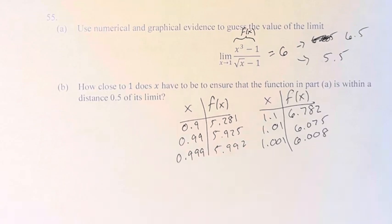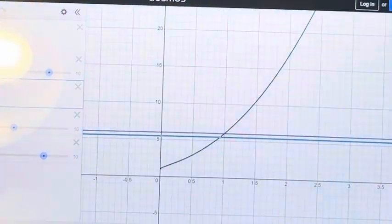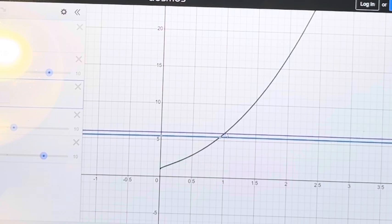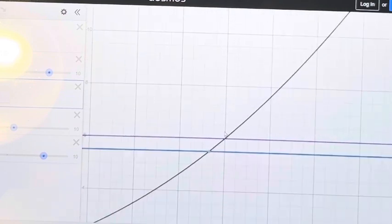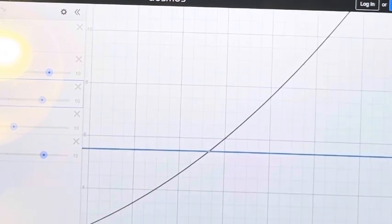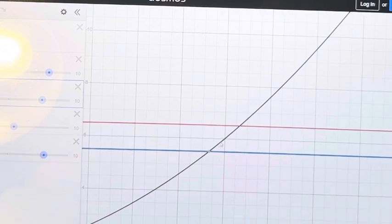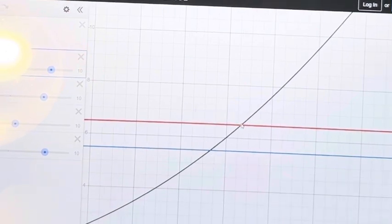And so if we graph these two lines, 6.5 and 5.5, and we can zoom in on the function and say, okay, what are the x values for these points? We can see we have 0.9314 and 1.063.